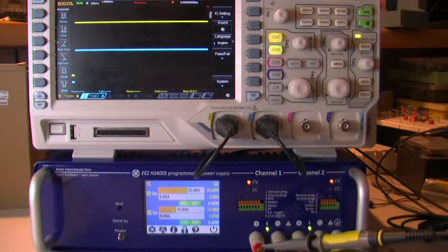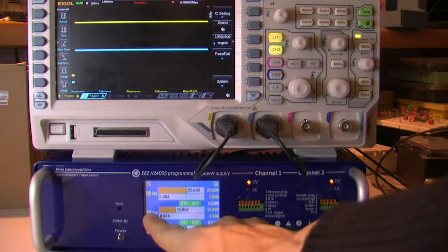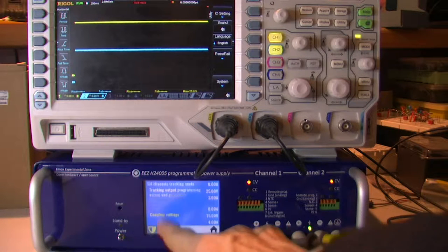Entering tracking mode is possible from any of channel settings, channel 1 or channel 2. We need to go to settings, and under advanced settings we have tracking control.